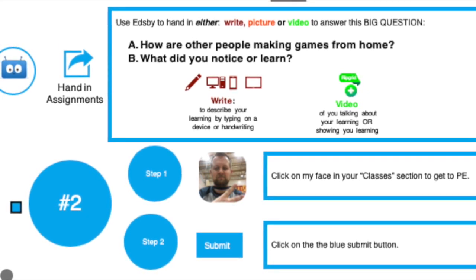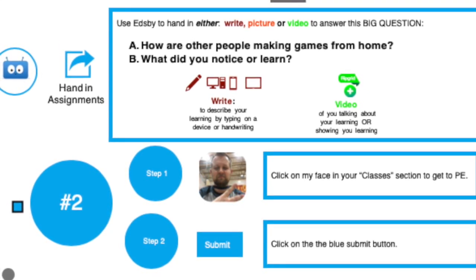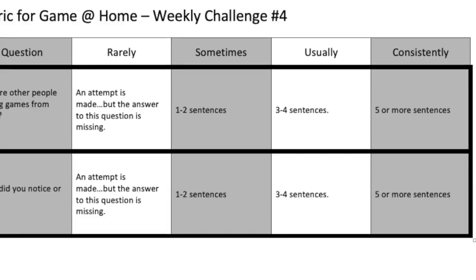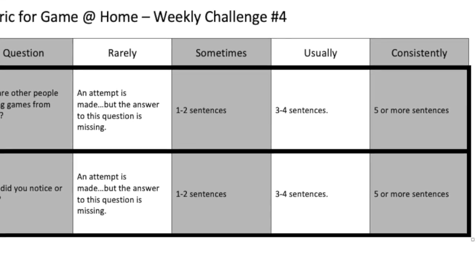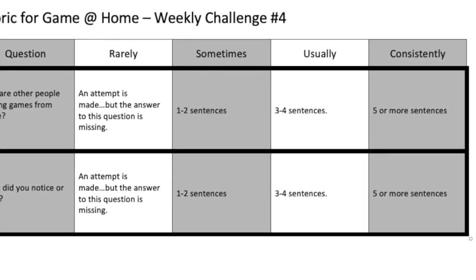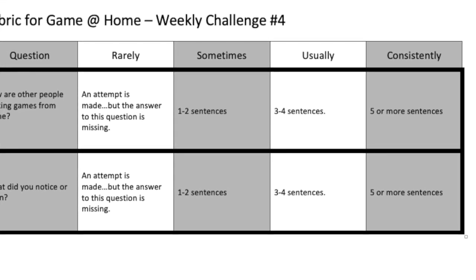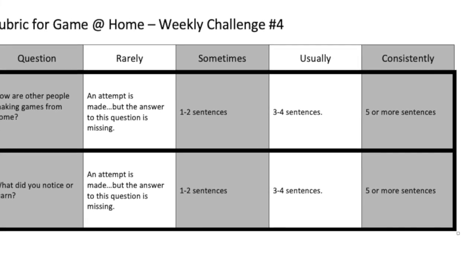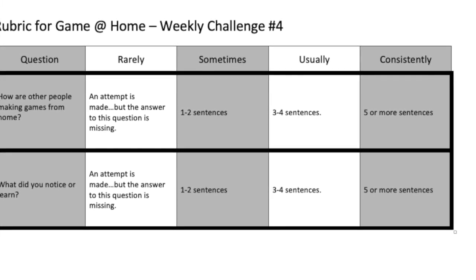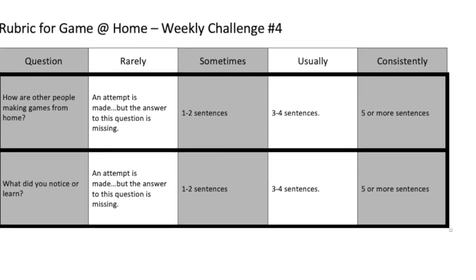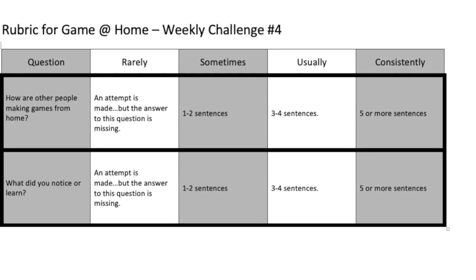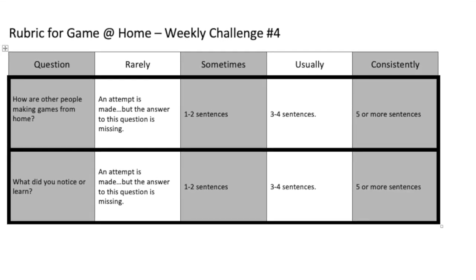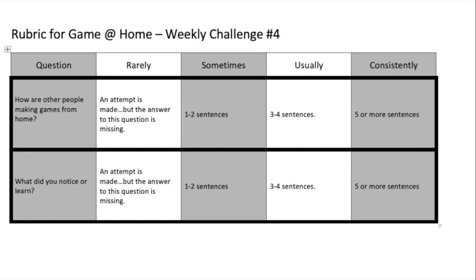Here's the rubric I'll be using on Edsby to assess your entry. You're going to find my face, just as you usually would, click on submit, and then look at this rubric. There are two parts, just as I said: how are other people making games from home? Five or more sentences gets you consistently. What did you notice or learn? Five or more sentences in that section also gets you consistently. The middle grey stripe shows what you would do to earn usually, and the furthest left is the question.